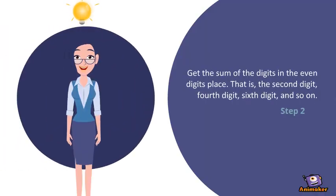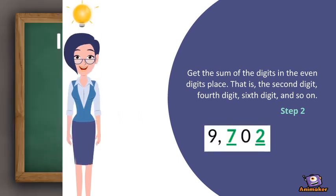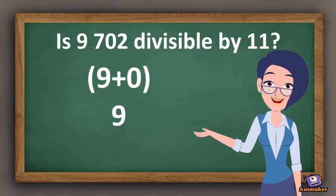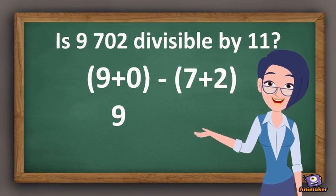Step 2: Get the sum of the digits in the even digits place. We have 7 in the second digit and 2 in the fourth digit. 7 plus 2 is 9.